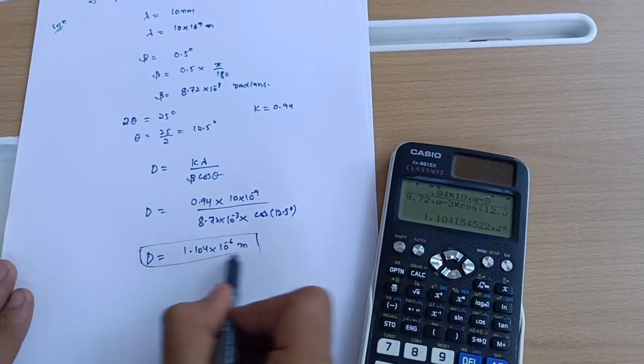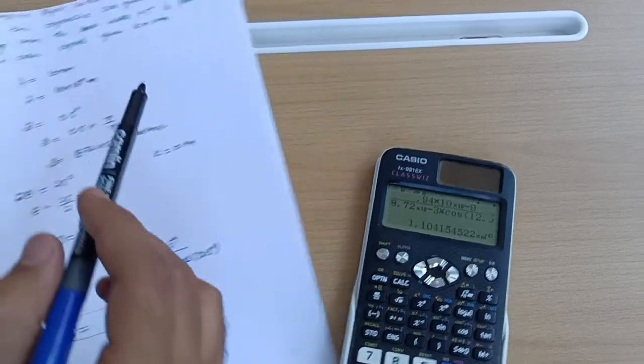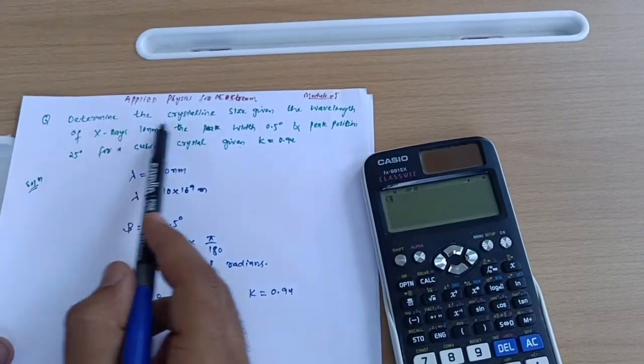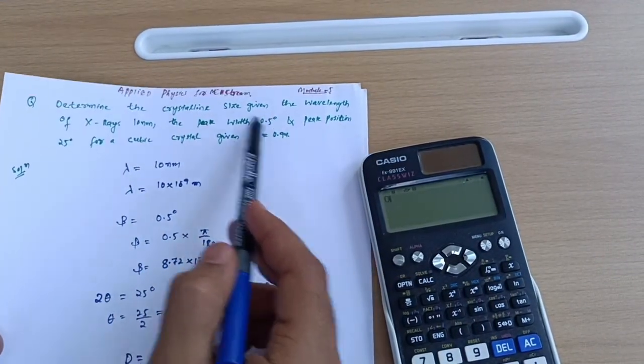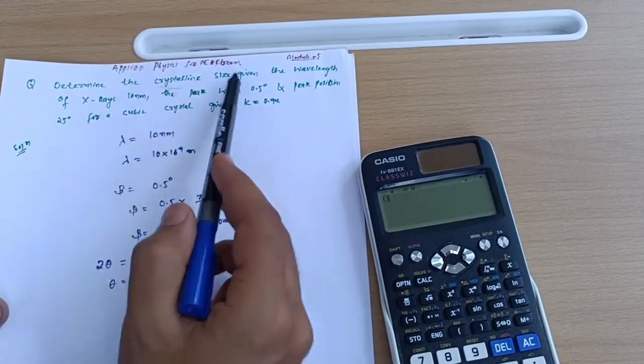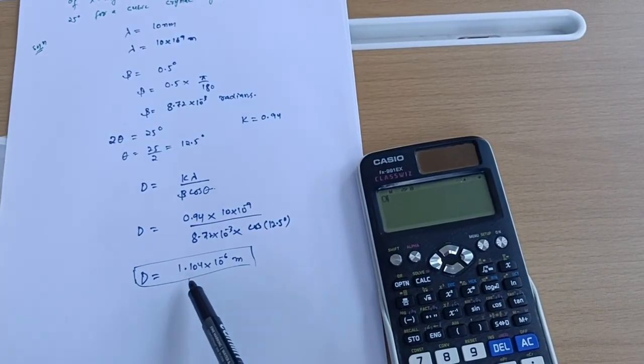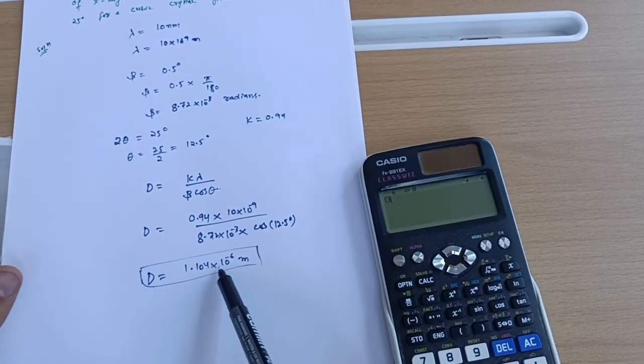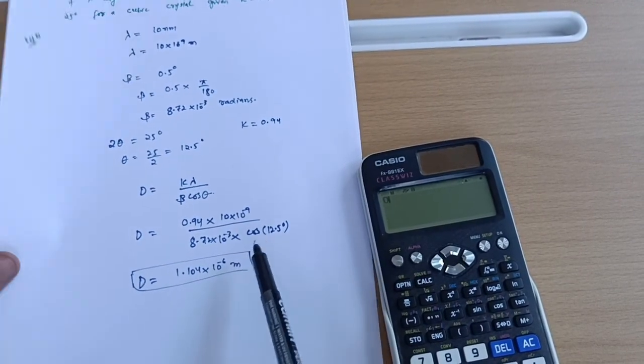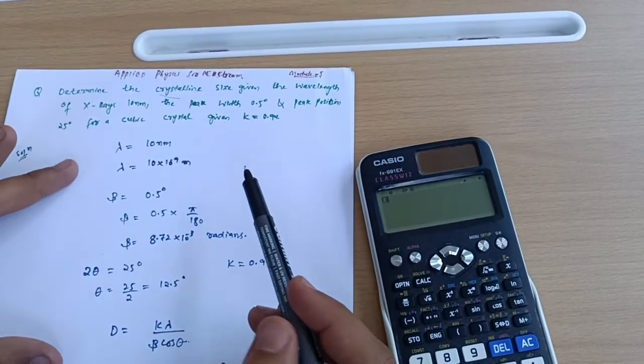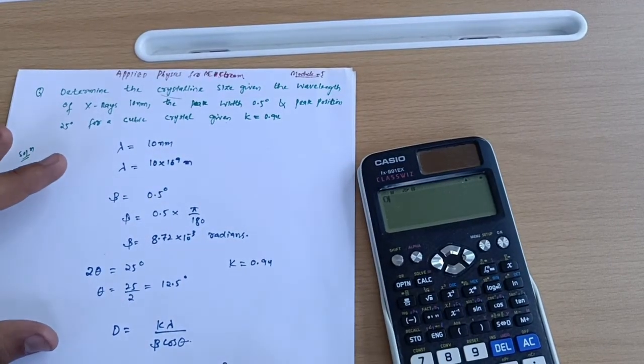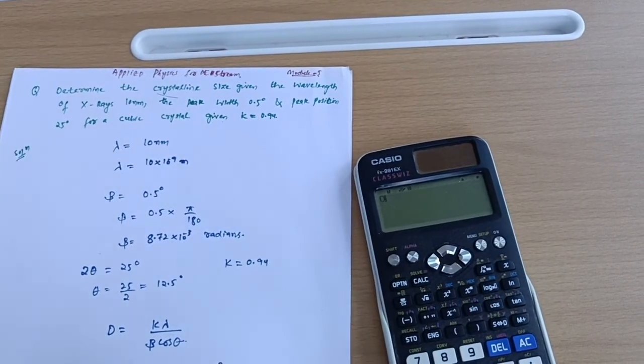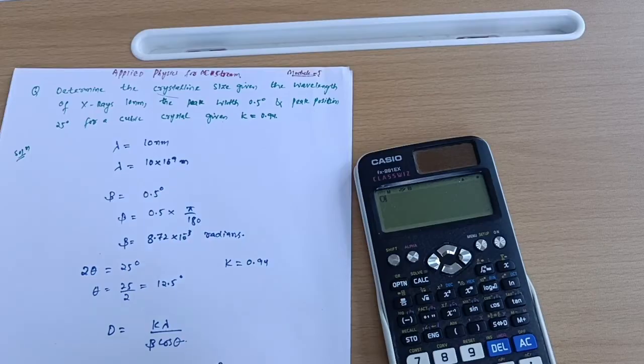Given the wavelength of X-rays, we get crystal size D = 1.104 × 10^-6 meters. This problem carries 5 or 6 marks - very simple. You should not lose these marks. Practice a variety of problems. I wish you all the best for your examinations. Thank you.